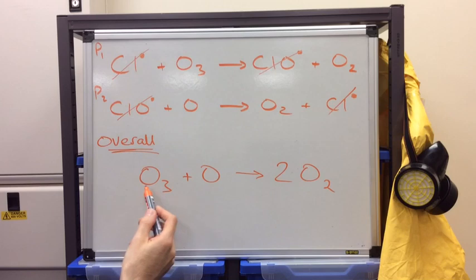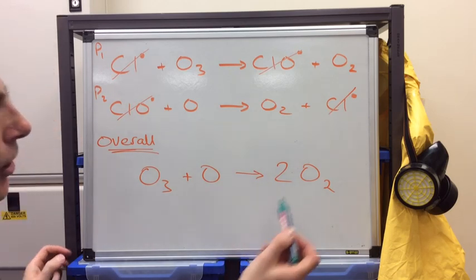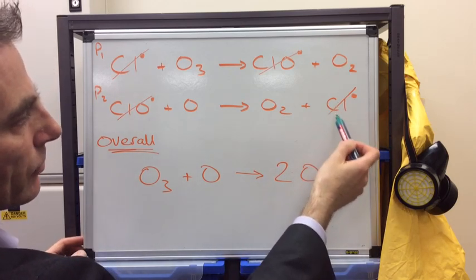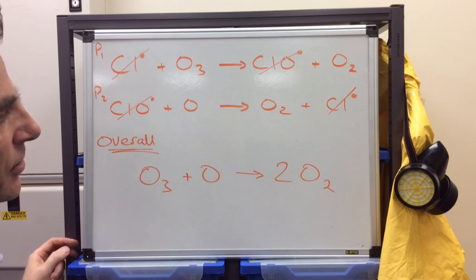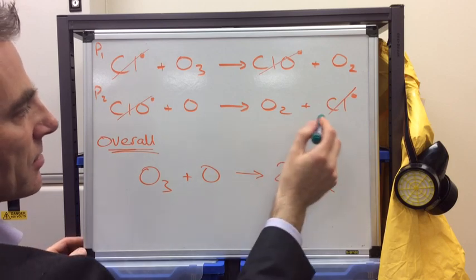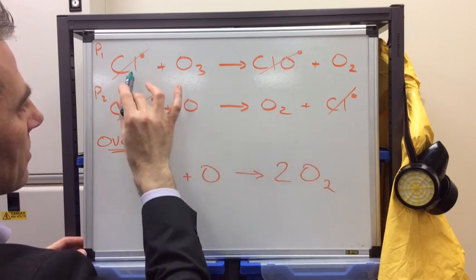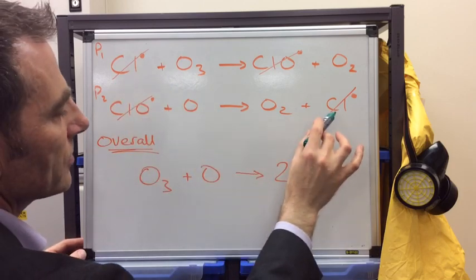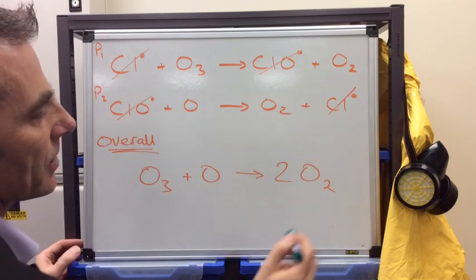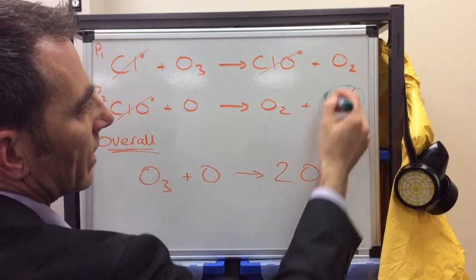You can see this overall equation is showing that ozone is being destroyed. Now, we can say a little bit more about the chlorine radical, the role of the chlorine radical in this process. Because it's used in the first propagation step, but then re-formed in the second propagation step, it is acting as a catalyst.